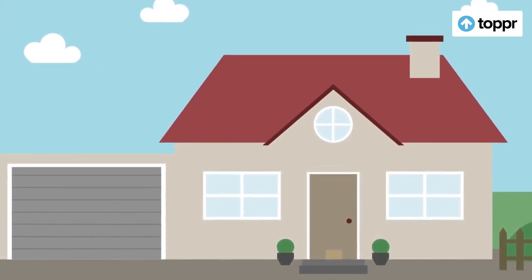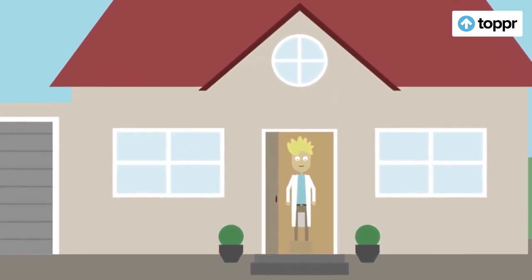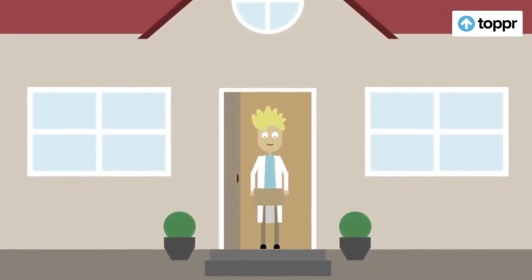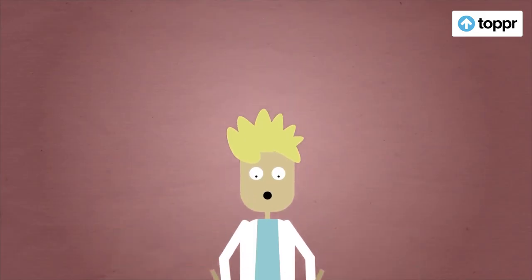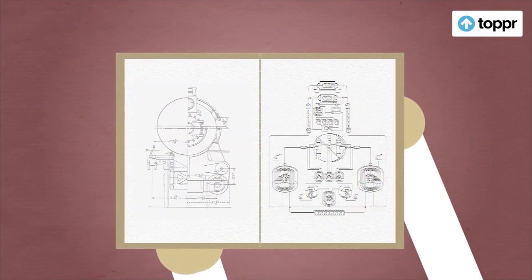Suppose ek din koi aapke ghar ki doorbell bajata hai. Door open karte hain to aapko wahan koi nahi dikhta. Door band karte time aapko niche ek kitaab dikhti hai. Aap book kholte hain aur usme aapko time machine banane ka manual milta hai. Par yeh sab aapko ek joke lagta hai aur aap book side mein rakh dete hain.